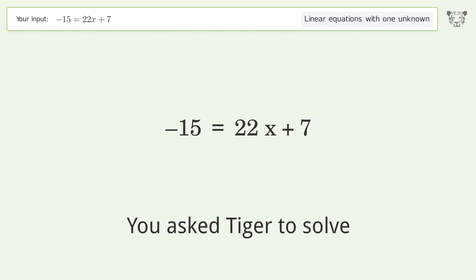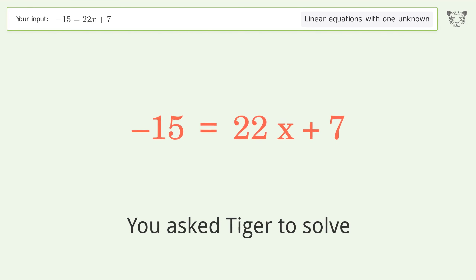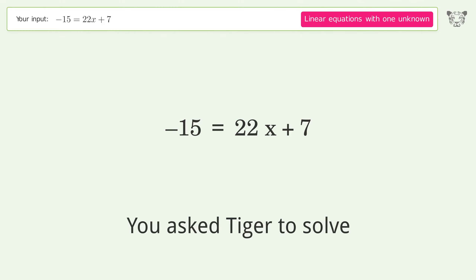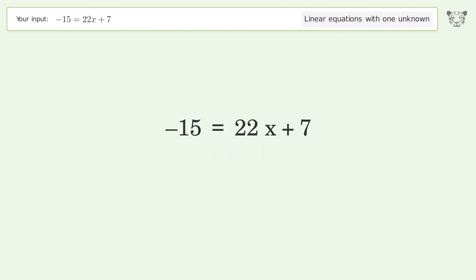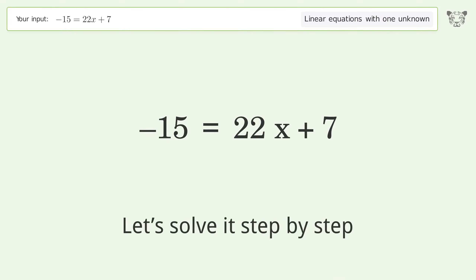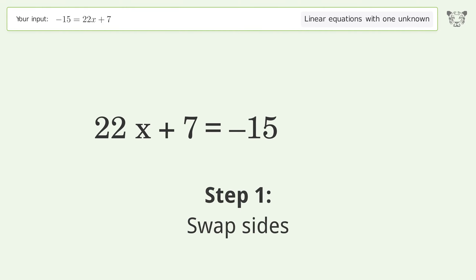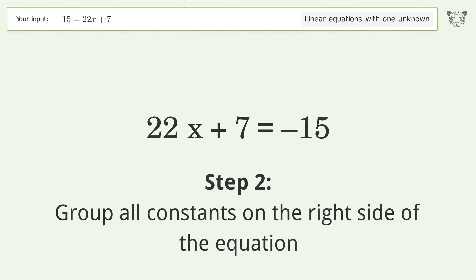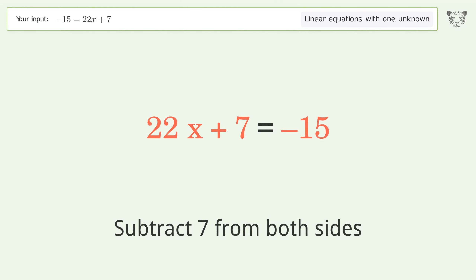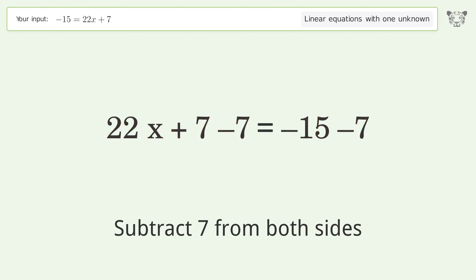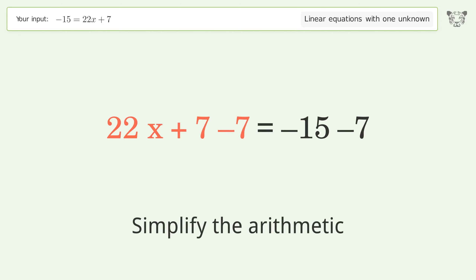You asked Tiger to solve this — it deals with linear equations with one unknown. The final result is x equals negative one. Let's solve it step by step. Swap sides, then group all constants on the right side of the equation by subtracting seven from both sides. Simplify the arithmetic.